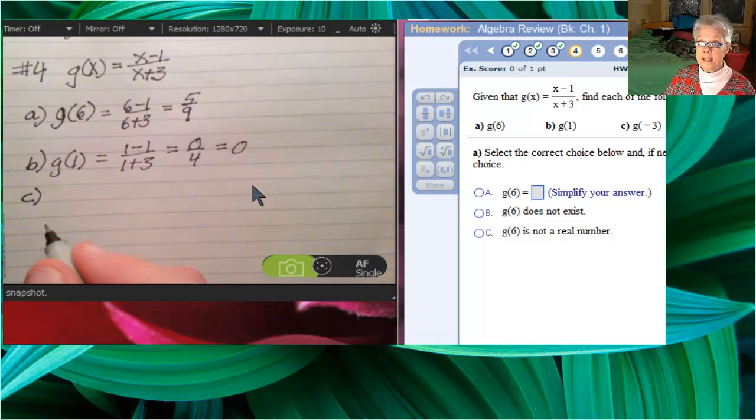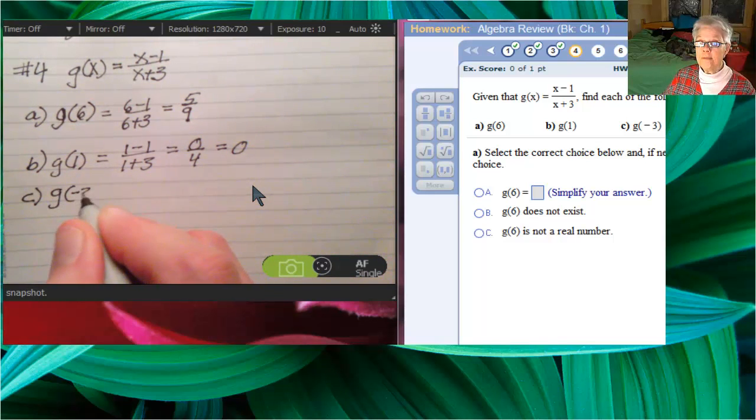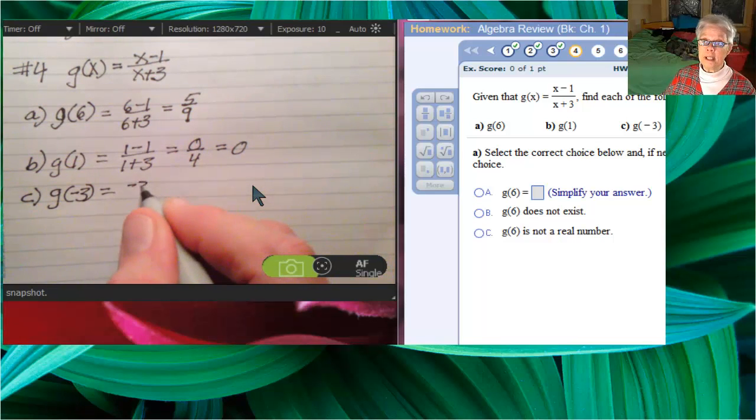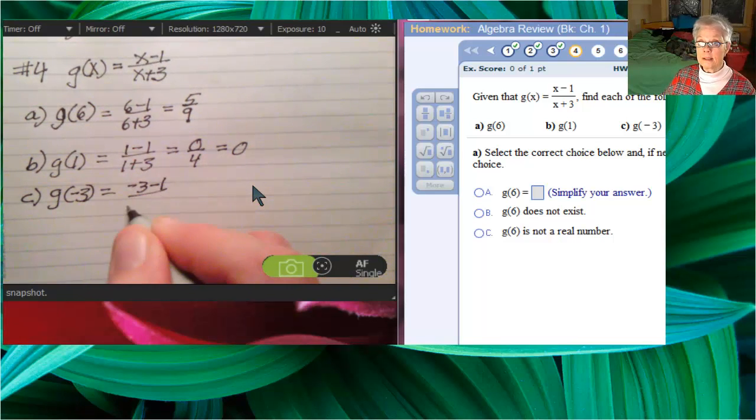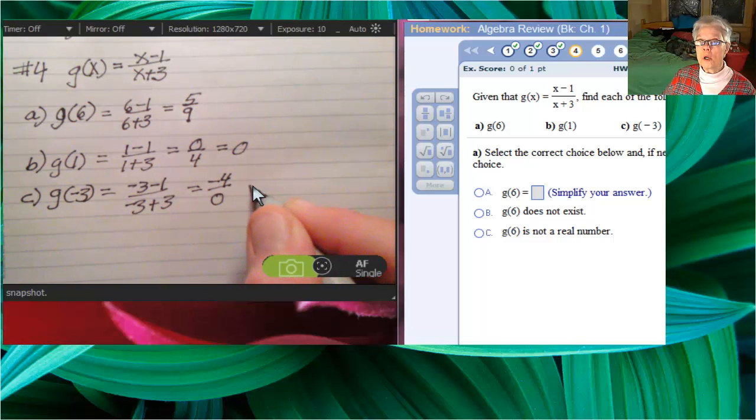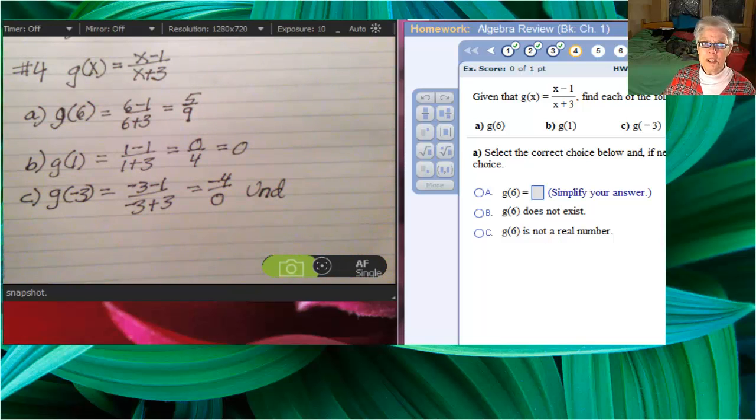Now, c, g of negative 3. We substitute a negative 3 for every x. That will give us negative 4 over 0, which is terrible. You can't have a 0 on the denominator. This is undefined.